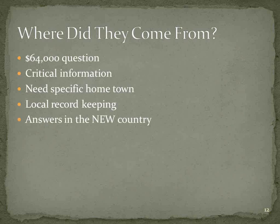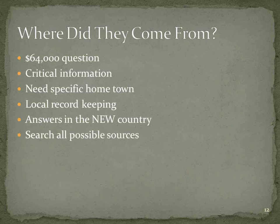The answer to the question of where your German ancestor came from is going to be found in the new country they came to — whether Canada, the United States, Brazil, Argentina, South Africa, or wherever. In America, you need to search all possible sources in American records for a clue with the name of the ancestral town. It might be on a passenger list, but usually not. It might be on a naturalization record, but in America not usually until 1906, and many immigrants naturalized before that. Sometimes an obituary, cemetery record, or the German-American church they attended will have that reference.